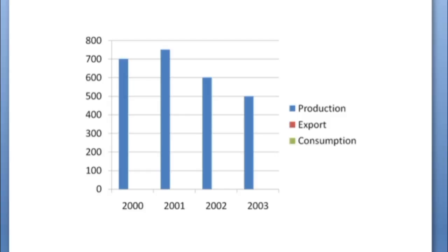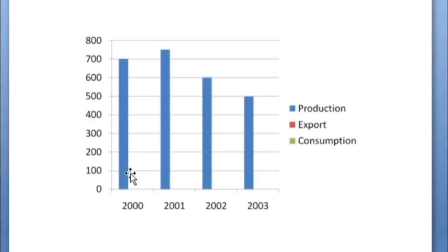Starting with production: in 2000 it was 700, in 2001 it was 750, in 2002 it was 600, and in 2003 it was 500. You can also see all values in the description below.